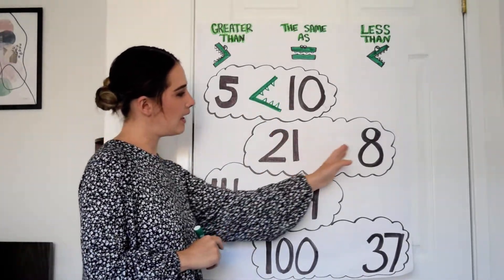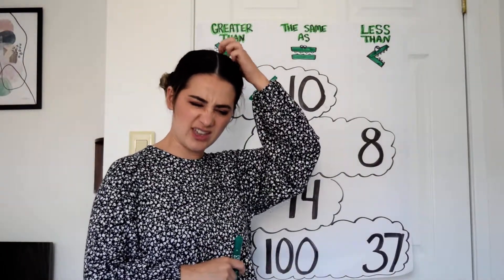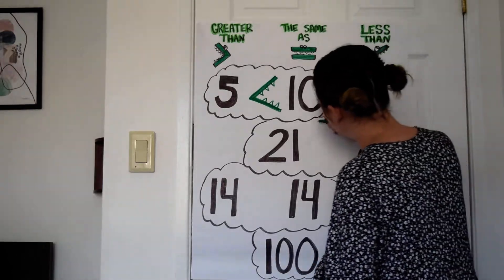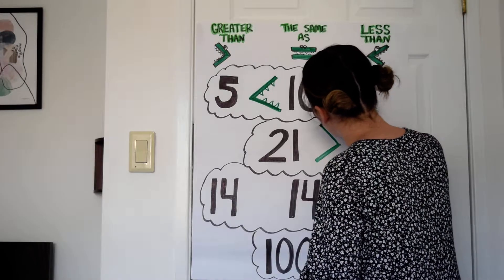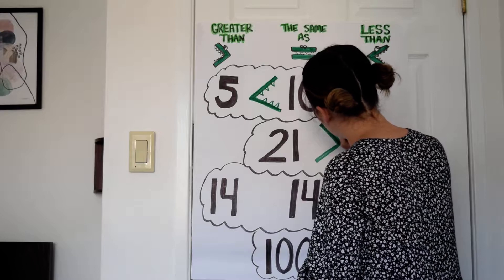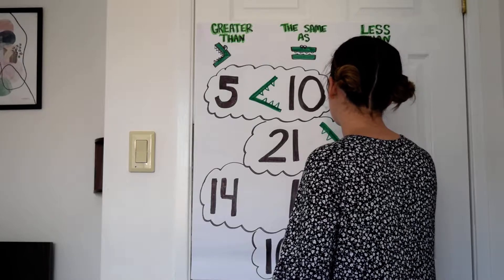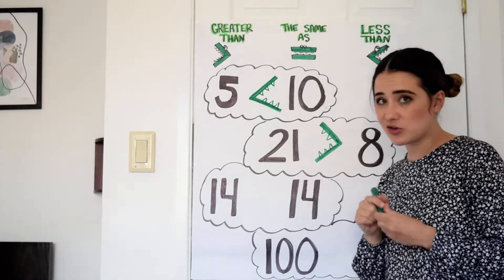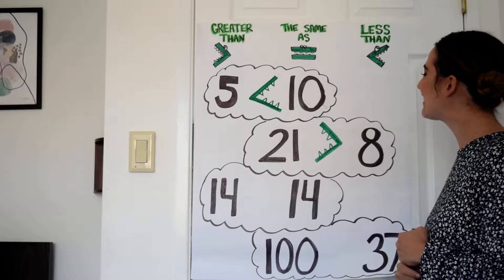Let's try the next one: twenty-one and eight. Which one do you think is greater? I think twenty-one is the bigger number, so I'm going to draw my alligator facing the twenty-one. Twenty-one is bigger than eight. Make sure the mouth of the alligator is always facing the bigger number. That's our greater than symbol — twenty-one is greater than eight.